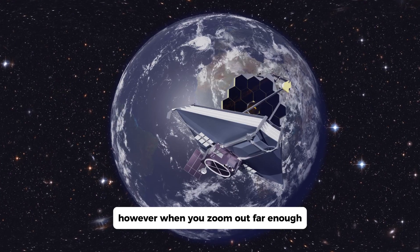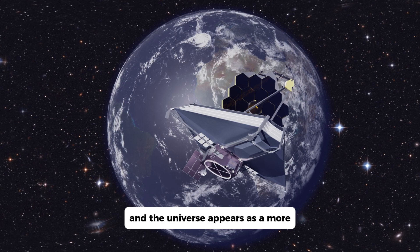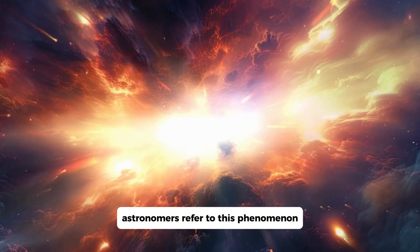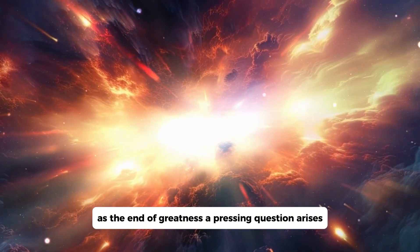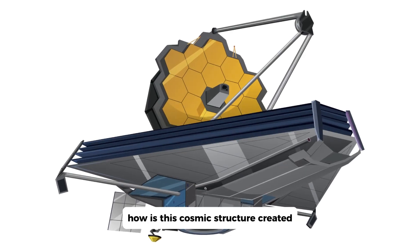However, when you zoom out far enough, this pattern seems to disappear, and the universe appears as a more uniform collection of galaxies. Astronomers refer to this phenomenon as the end of greatness. A pressing question arises: how is this cosmic structure created?